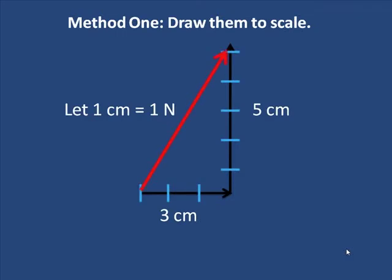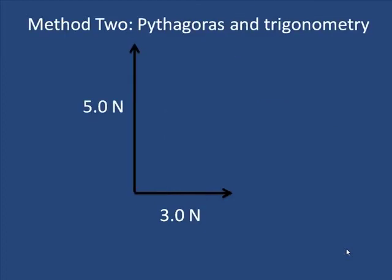And then we draw the resultant, where I start and where I end. And once I've drawn that, I actually measure it with a ruler. I measure R and I measure theta. With theta with the protractor, R, I measure how many centimeters, and that's the equivalent then of the newtons. And it works very well. You should actually try one.